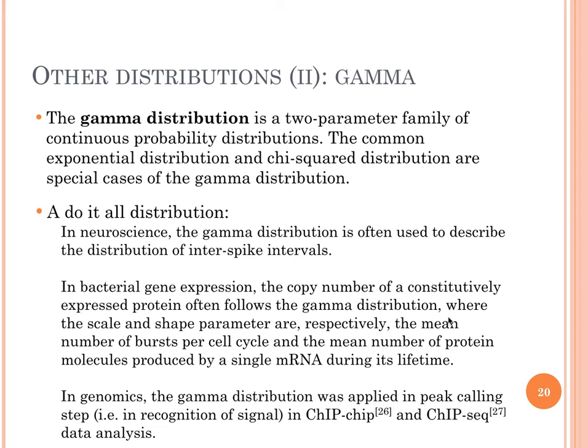Another distribution is the gamma distribution, which has a continuous probability and two parameters: the scale and the shape. Two well-known examples of the gamma distribution, which is a generic distribution, are the exponential and the chi-square distribution.